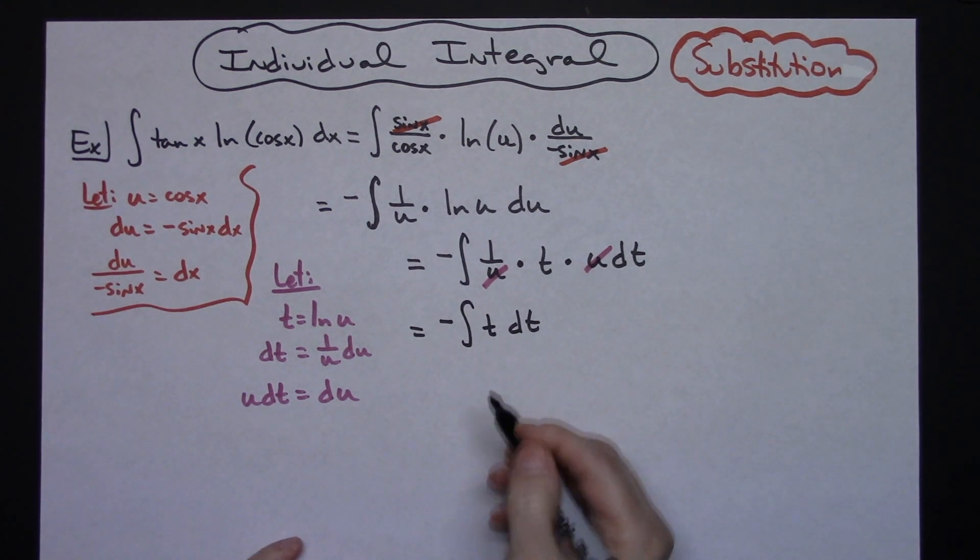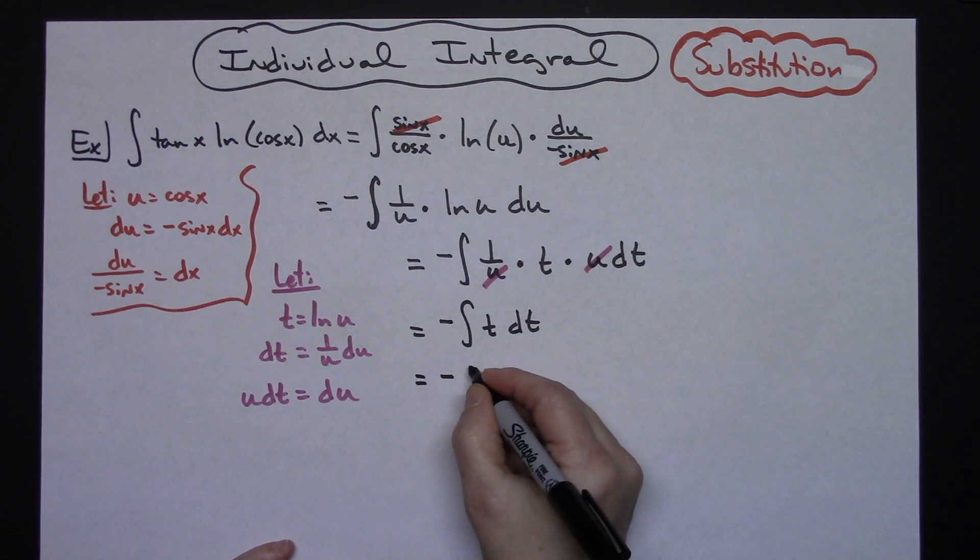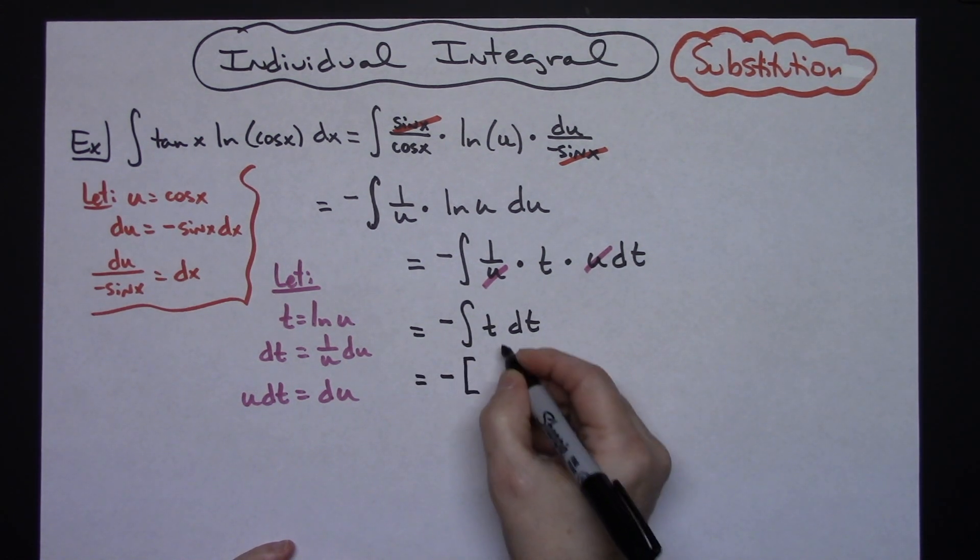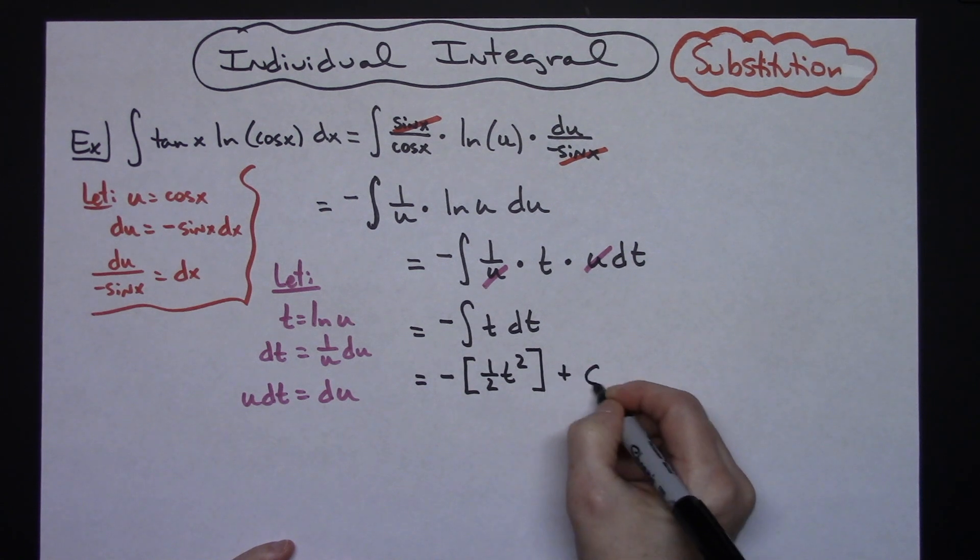Alright, now I'm to some place where I can actually integrate this. Alright, so the negative stays out in front. And then I will have t to the second power with a 1 half in front and a plus c.